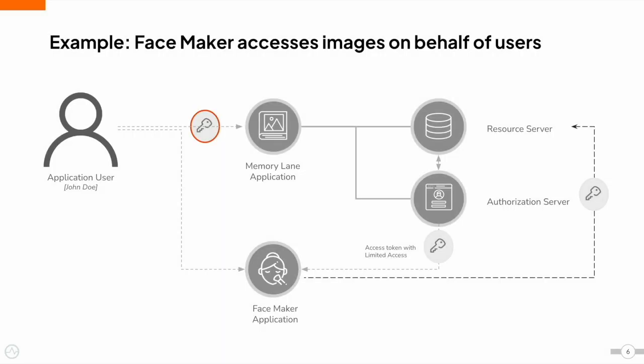Similar to valet keys, if we can get a token from the MemoryLane service with limited access, we can give that token to the Facemaker application to access the photographs without performing any restricted operations. To do this, as a user, you can first authenticate with the MemoryLane service and request a token with limited access. Then, that token can be handed over to the Facemaker application. Using this new token, the Facemaker application can access the photographs.